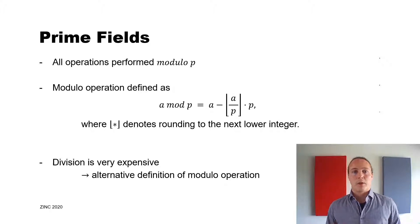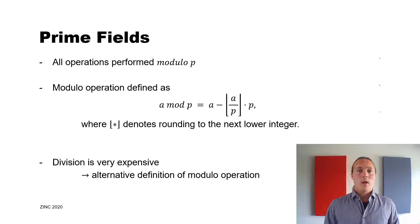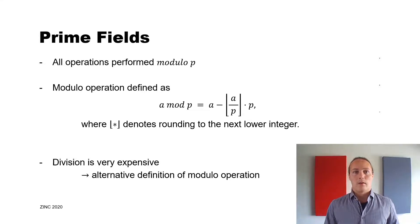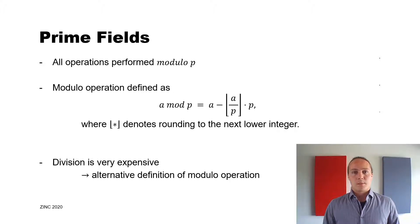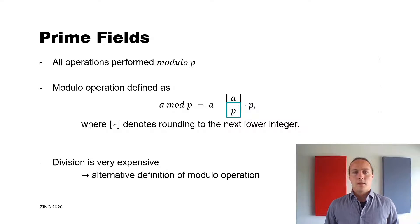The modulo p operation for addition and subtraction can be computed very easily. For addition, the maximum result is 2p − 1, so we can just check whether the result is larger than p and if so subtract p to remain in the prime field. For subtraction, we check whether the result is negative and if so add p. But for multiplication, we need the full modulo operation, which requires a division by p — and this division is very expensive. In the next slides I'll show two alternative definitions of this modulo operation which omit this division by p.